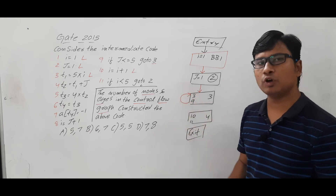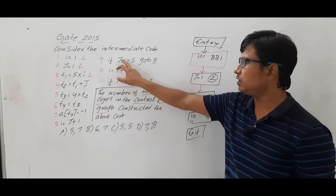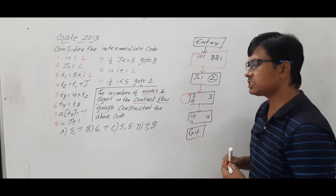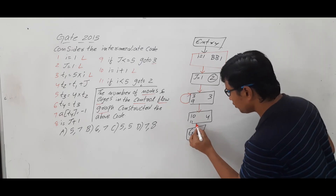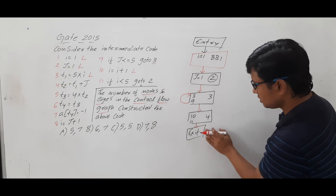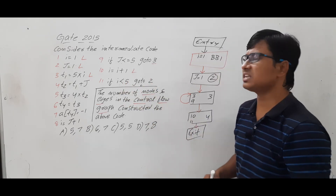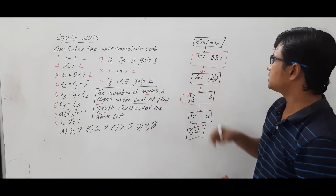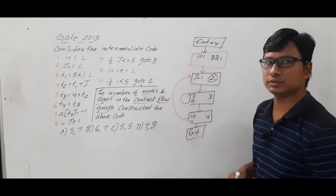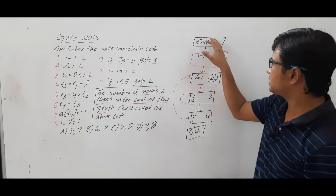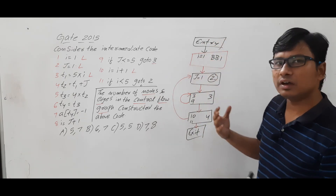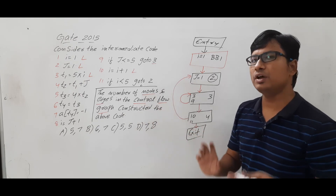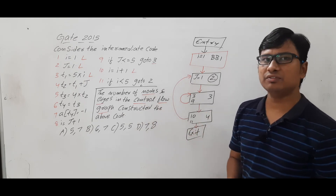Instruction number 9 is a conditional goto statement: when the condition is true you execute 'goto 3', going back to instruction 3 — so from basic block 3 you go back to basic block 3 itself. If the condition fails, you execute the next instruction 'i = i + 1', which is in basic block 4. So from basic block 3 you also go to basic block 4. This is how the control flow graph is constructed.